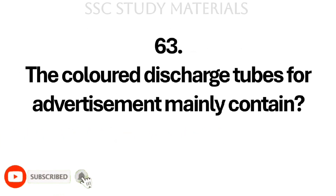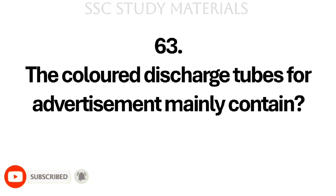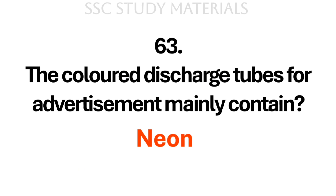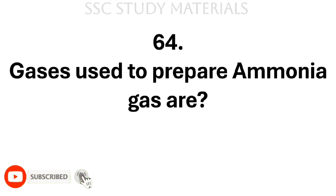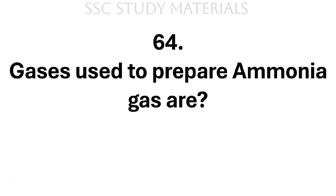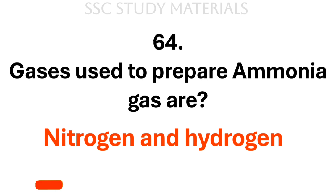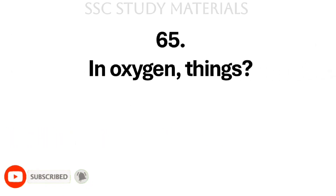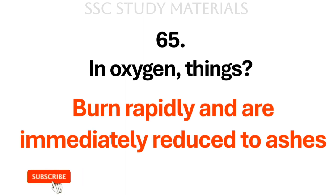Question No. 63: The colour of discharge tubes for advertisement mainly contains? Answer: Neon. Question No. 64: Gases used to prepare ammonia gas are? Answer: Nitrogen and hydrogen. Question No. 65: In oxygen, things? Answer: Burn rapidly and are immediately reduced to ashes.